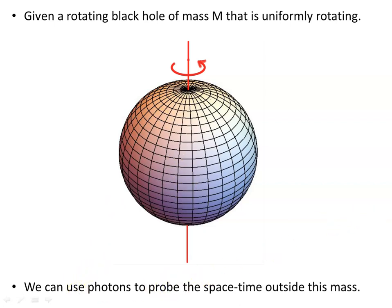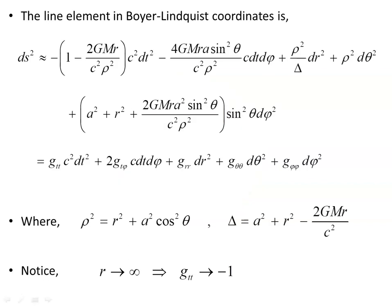The line element in Boyer-Lindquist coordinates is as found in previous videos, and we can write that in terms of g_tt, g_tφ, and the differentials of each coordinate: c dt, dφ, dr², dθ², dφ². We have rho squared defined as r² + a² cos²θ, and delta defined as a² + r² − 2GMr/c². We notice that g_tt approaches −1 asymptotically as r approaches infinity.